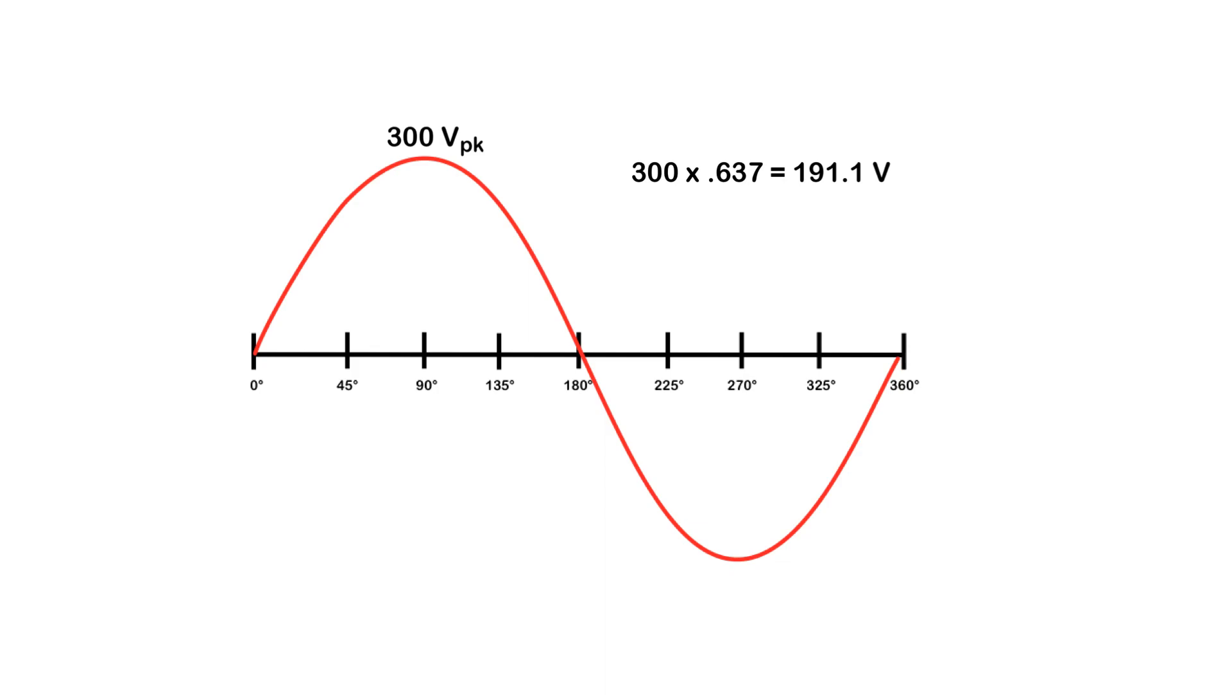Now, when we're talking about average value, why that's important to us is when we get to electronics and we're talking about rectification, it's important that we understand where that 0.637 comes from, and that will be in a later video at a later date.